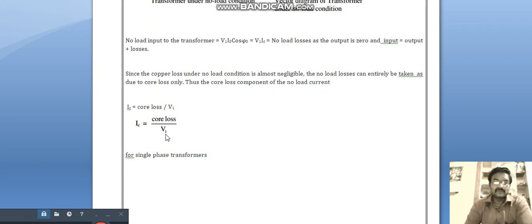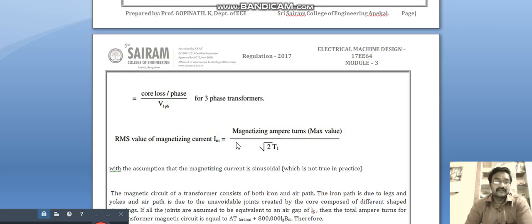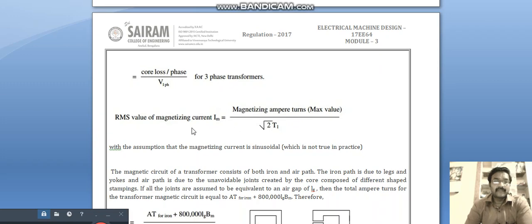Ic is equal to core loss by V1 for single phase transformer, or core loss per phase by V1 phase for three phase transformer. The RMS value of magnetizing current Im is equal to magnetizing ampere turns max value by square root of two multiplied with T1.